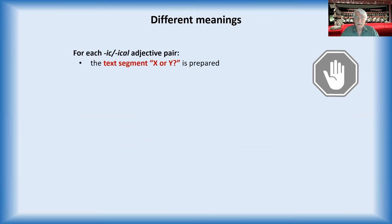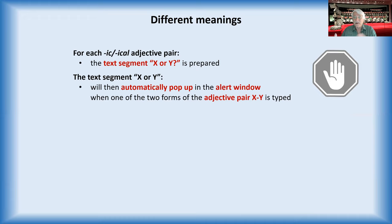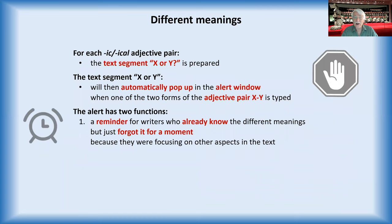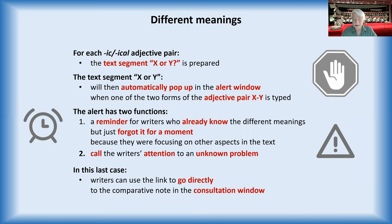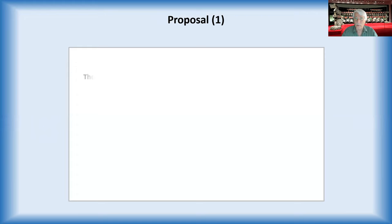For each adjective pair, a segment x or y is prepared. And this will automatically pop up in the alert window when the user or writer writes one of these two words. And the alert has two functions. It works as a reminder. If they already know, just forget it. And it could call the user's attention to an unknown problem. And in this case, they can go directly to the comparative note in the consultation. Let's see how it works. Proposal one.